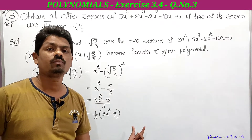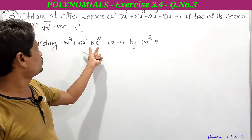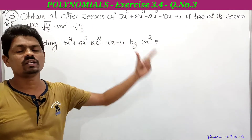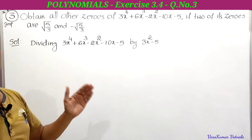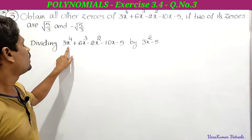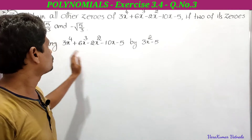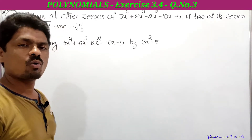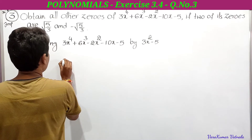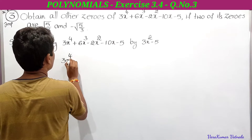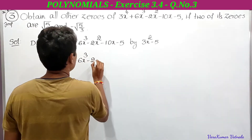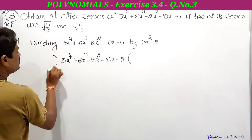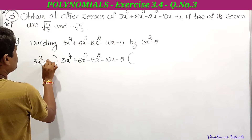Now dividing 3x⁴ + 6x³ - 2x² - 10x - 5 by 3x² - 5. Before dividing, we check whether the polynomial is in standard form. The powers of x are 4, 3, 2, 1, 0 — decreasing order — so it is in standard form. We write this as the dividend: 3x⁴ + 6x³ - 2x² - 10x - 5, divided by 3x² - 5.